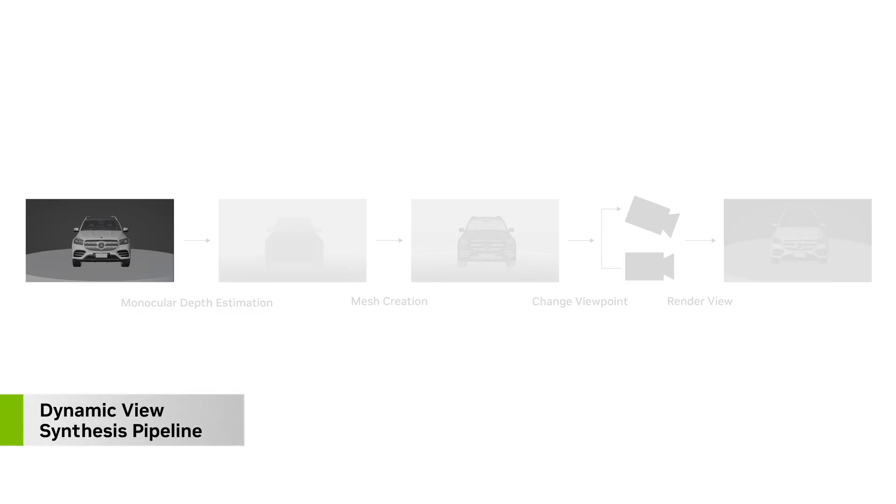Instead, dynamic view synthesis relies on a DNN trained to estimate scene depth from a single image. The depth is then transformed into a mesh, which can then be used to render images from different angles.